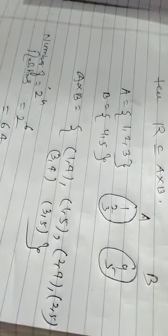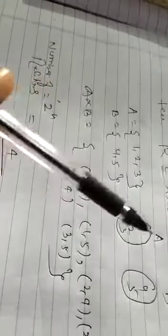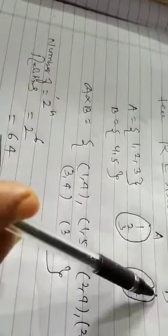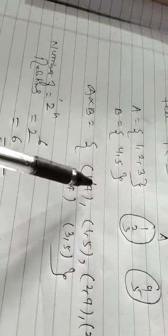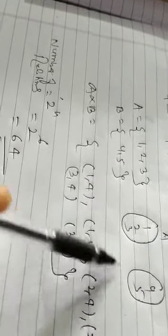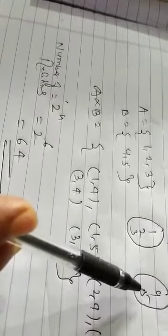So the elements of A are known as domain. Elements of B are known as co-domain. And the set of images of elements of A are known as range. Here, co-domain and range both are same.